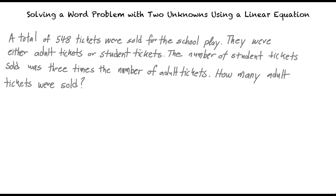Sure! In this problem, a total of 548 tickets were sold for the school play. They were either adult tickets or student tickets. The number of student tickets sold was three times the number of adult tickets sold. We are asked to find how many adult tickets were sold. Our first step is to assign variables to the unknowns in this problem.